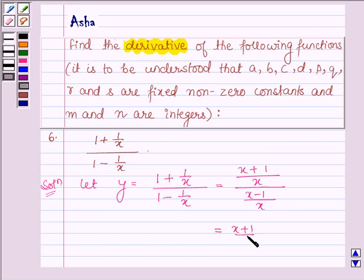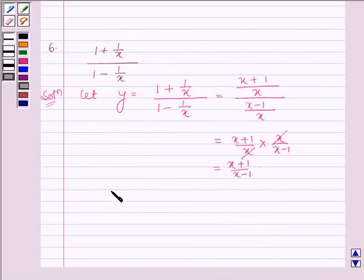We have X plus 1 upon X times X upon X minus 1. On cancelling we have X plus 1 upon X minus 1. Therefore, Y is equal to X plus 1 upon X minus 1.